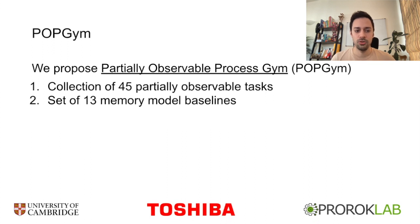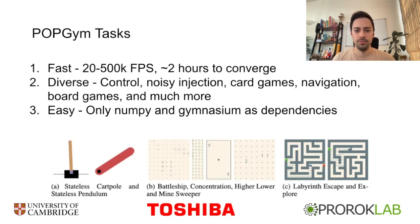So we propose Partially Observable Process GYM, or PopGym for short. It's a collection of 45 partially observable tasks and a set of 13 memory model baselines. PopGym tasks are fast — they run between 20,000 and half a million frames per second, which allows us to train memory-based policies to convergence in just a few hours on a single GPU.